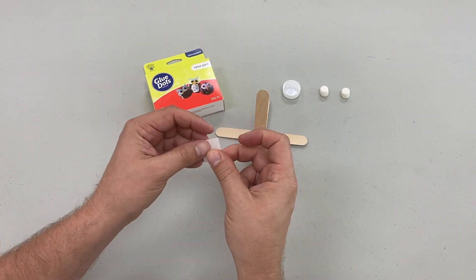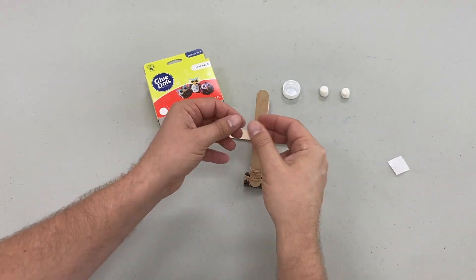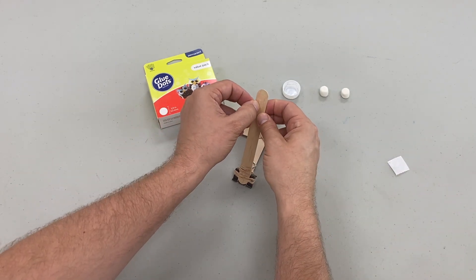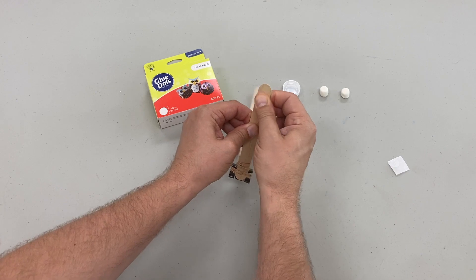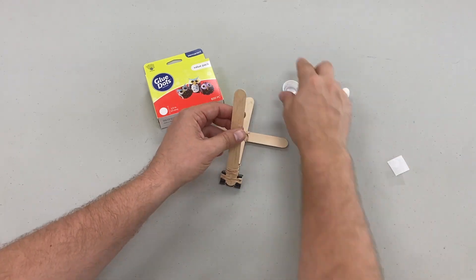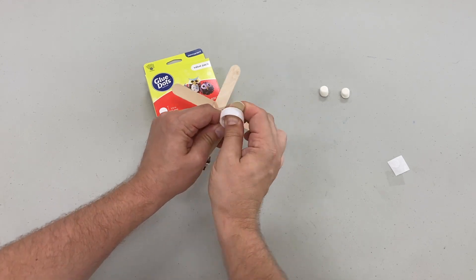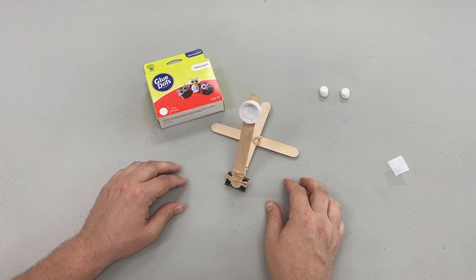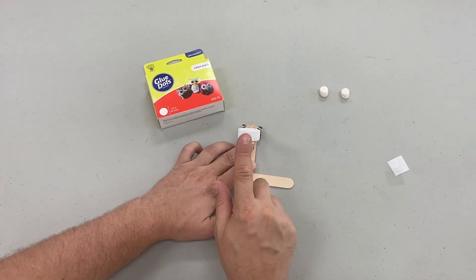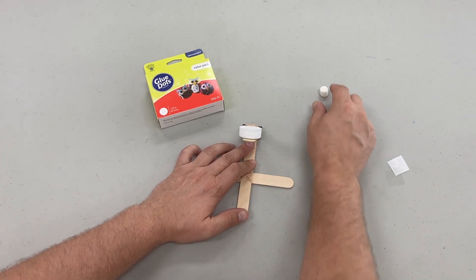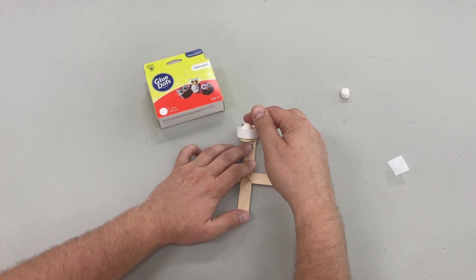Almost done. Grab a glue dot and secure it to the lever of your catapult, which is the side that's not the base. I like to put my glue dot about a half an inch from the top so that I have some room for my finger to pull back on the catapult. Go ahead and secure a soda cap or water bottle lid to build your bucket.